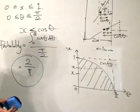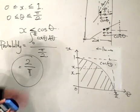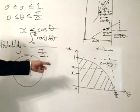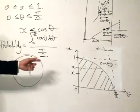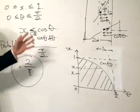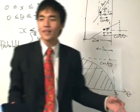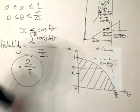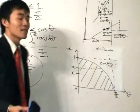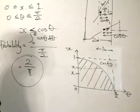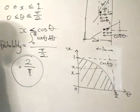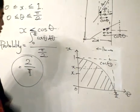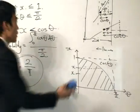This approach is necessary because we're dealing with an infinite amount of outcomes. Why is it infinite? Because theta can be 60, 60.1, 60.4, 65.36 — it's continuous. So we need a continuous method, and that is calculus, to solve the problem.